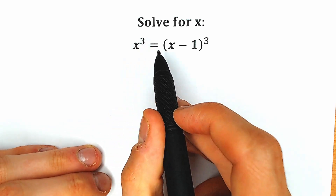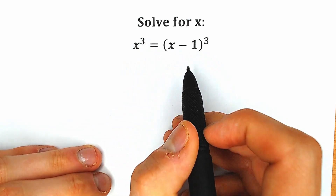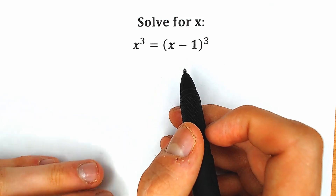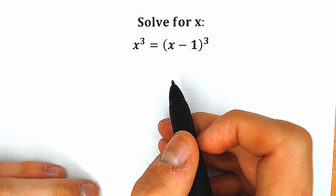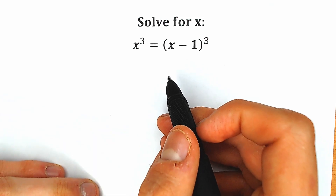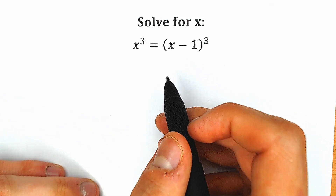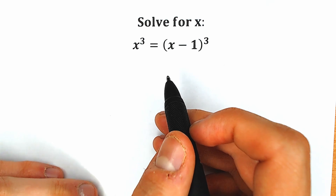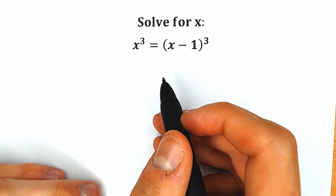So we have x cubed equal to x minus 1 to the third power, and you need to find x. You can also write your solution down in the comment section and we will check our answers here in just a few minutes. It will be really interesting.